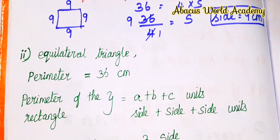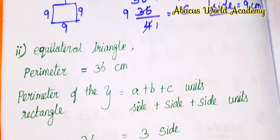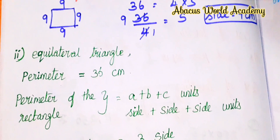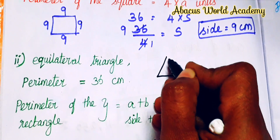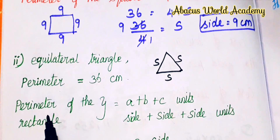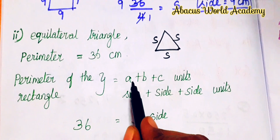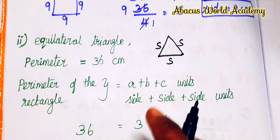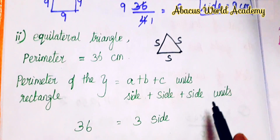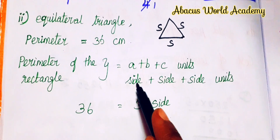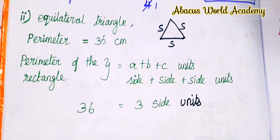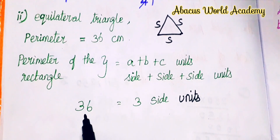Next, using the same wire, form an equilateral triangle. Length is 36 cm and we form an equilateral triangle. An equilateral triangle has 3 equal sides. The perimeter of the triangle is equal to a plus b plus c units - that is the formula. But since all sides are equal, it becomes side plus side plus side, that is 3 into side units.